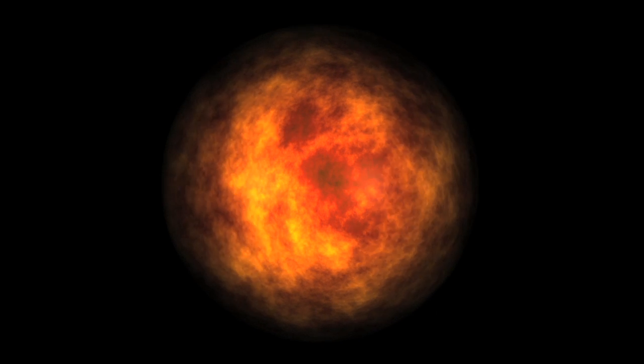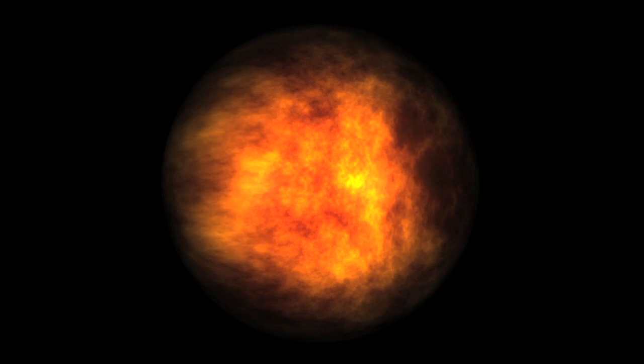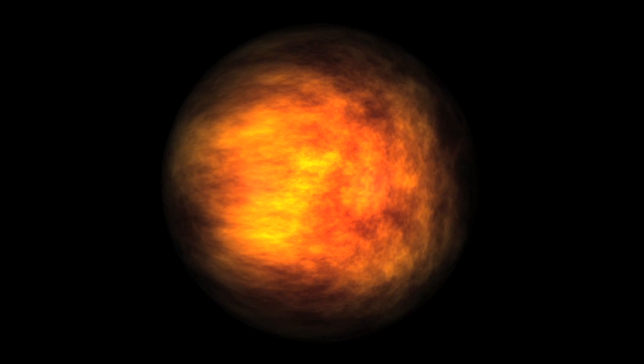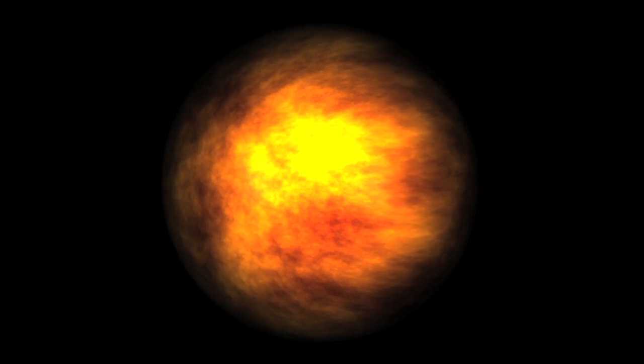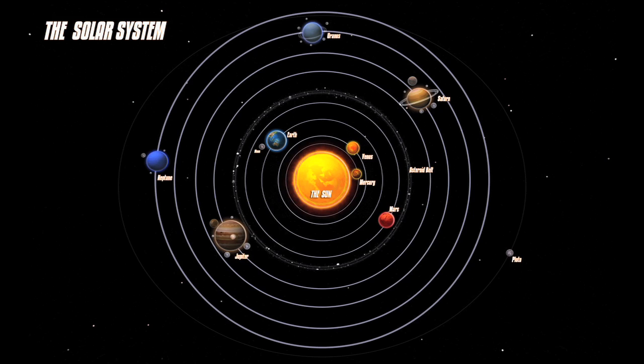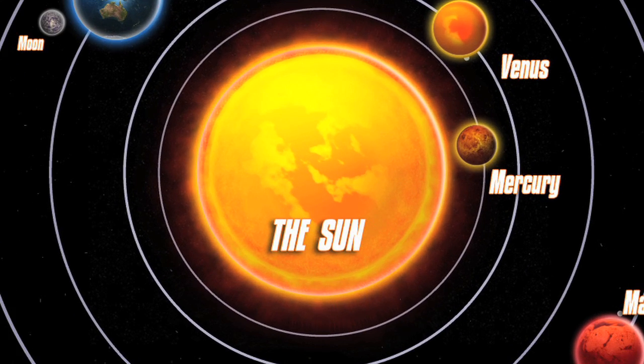Billions of years later, these bodies became planets in our solar system orbiting around the sun. Our solar system consists of the sun, inner planets, and outer planets.